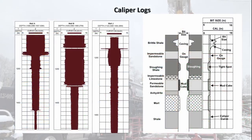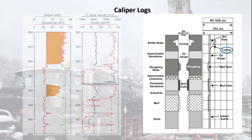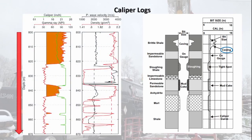A caliper logging instrument takes resistance measurements from the borehole walls as the caliper's arms are moved along them and translates them directly into diameter measurements. Units are typically in inches, and these instruments are useful for sensing cave-ins or voids within the formation. The measurements from this tool are overlaid with other instruments in the wireline logging suite for depth correlation.